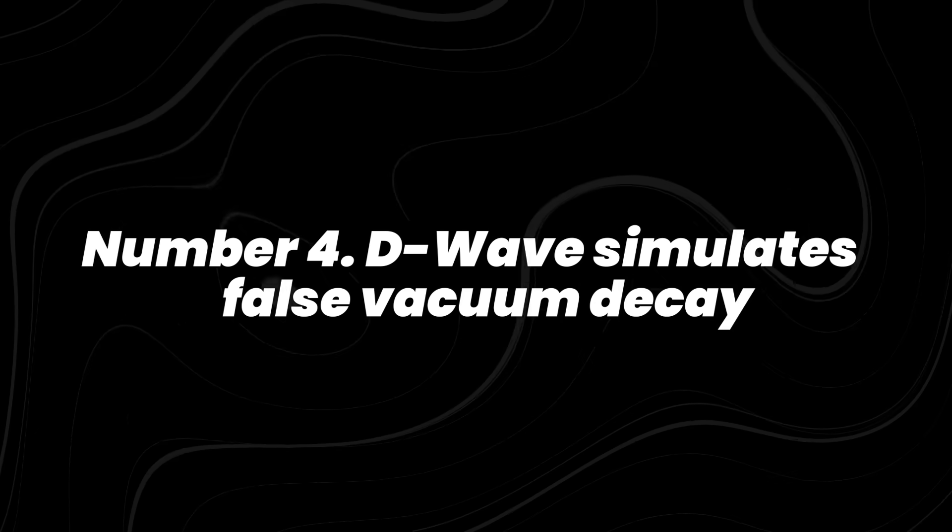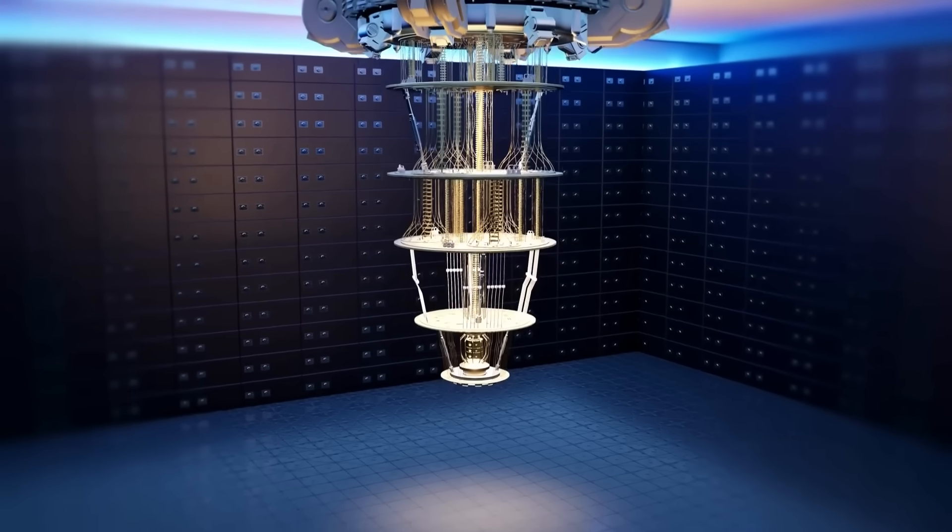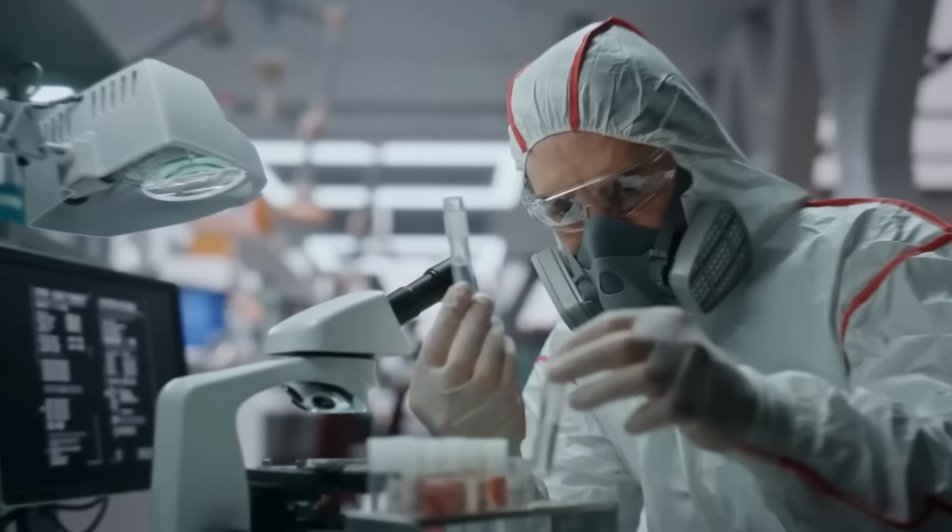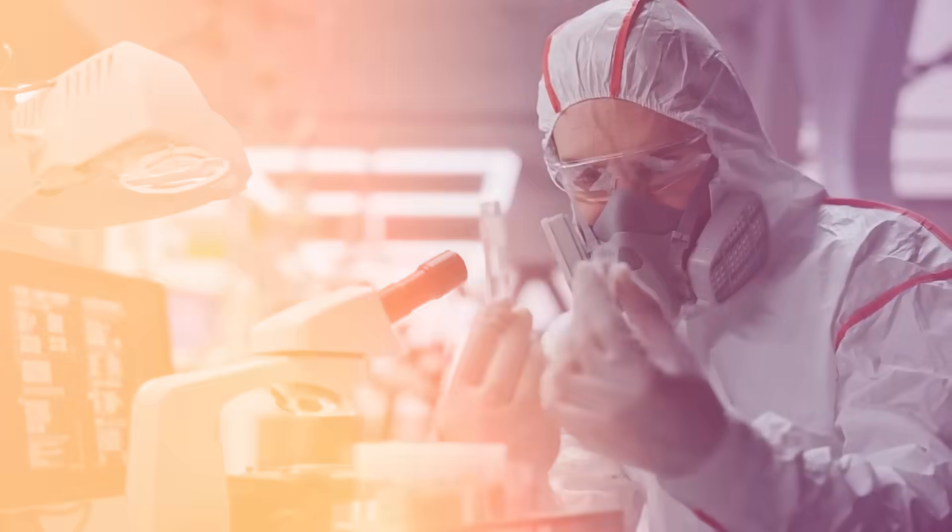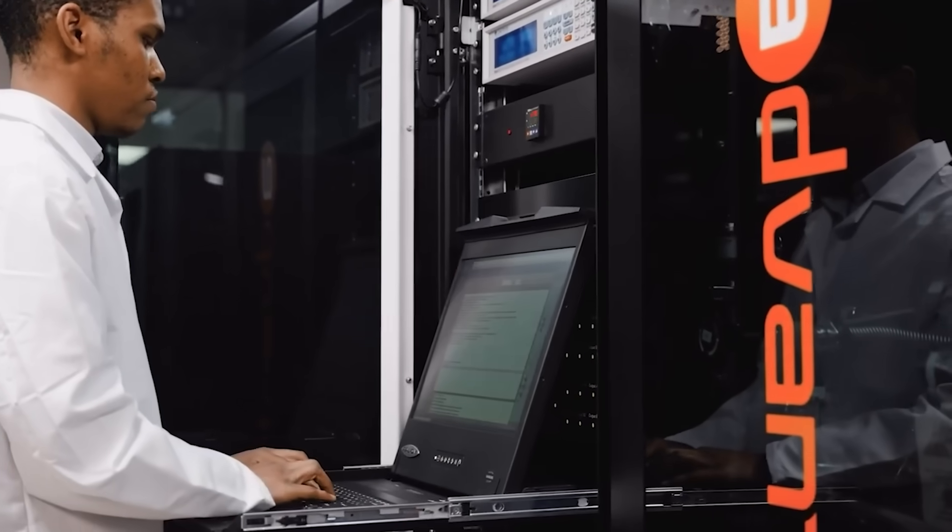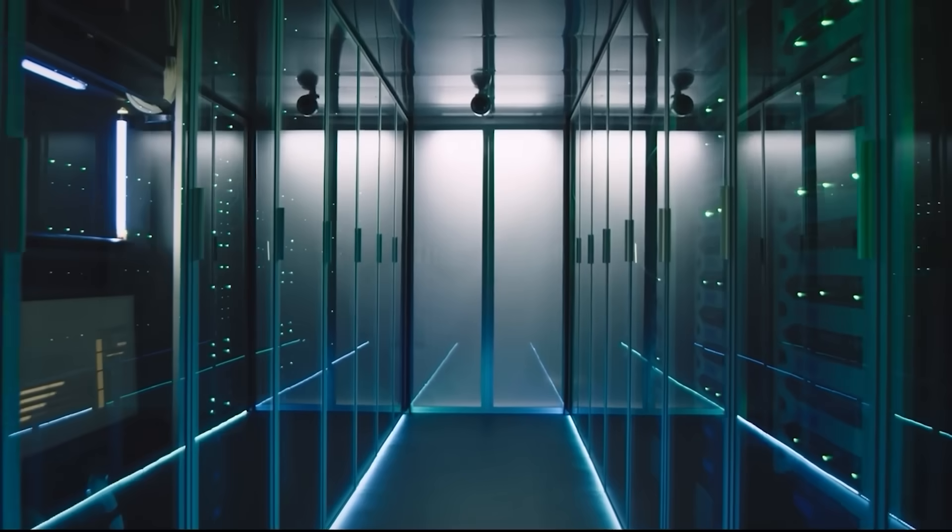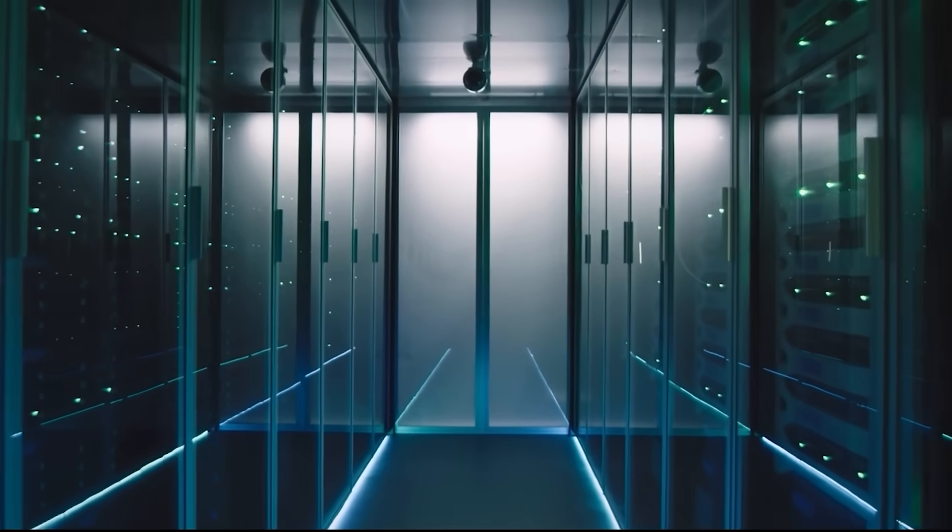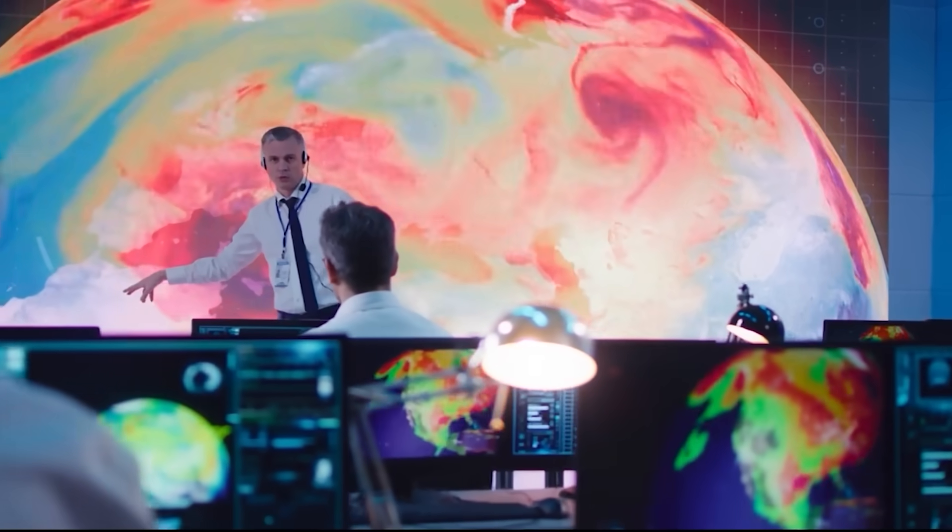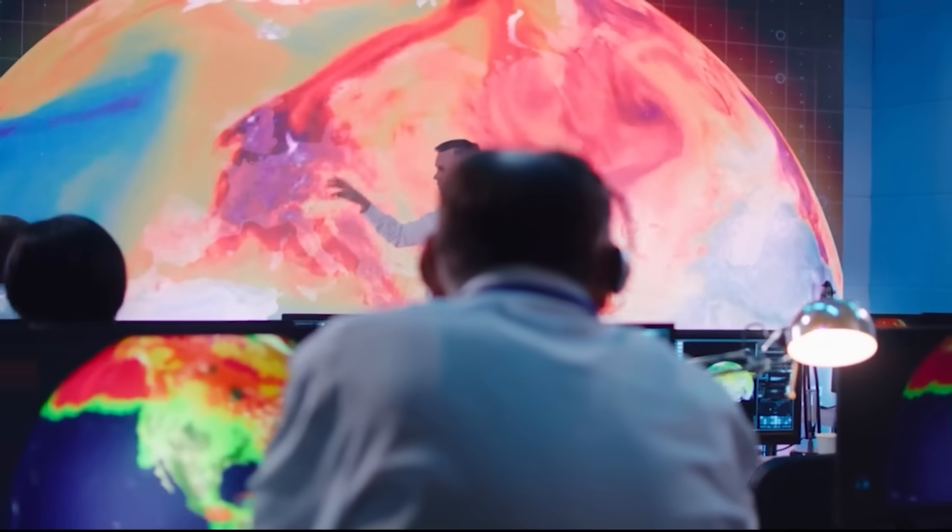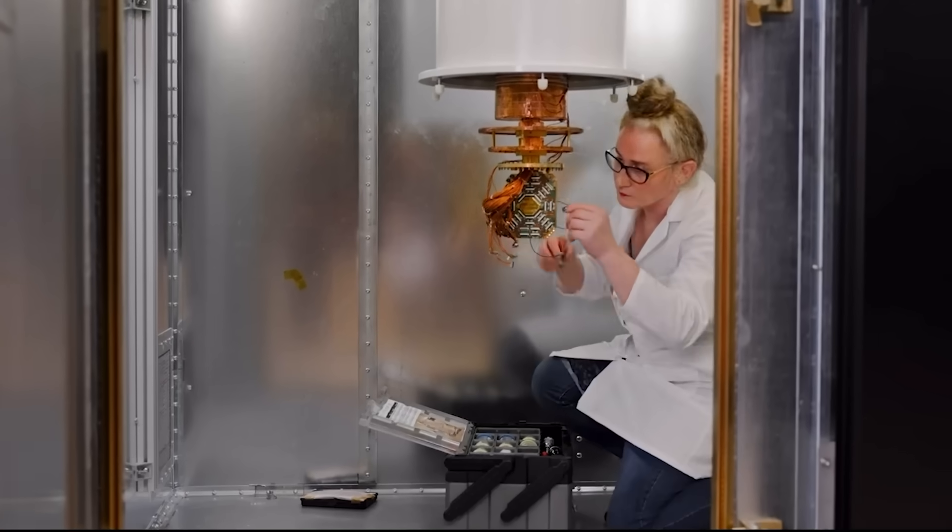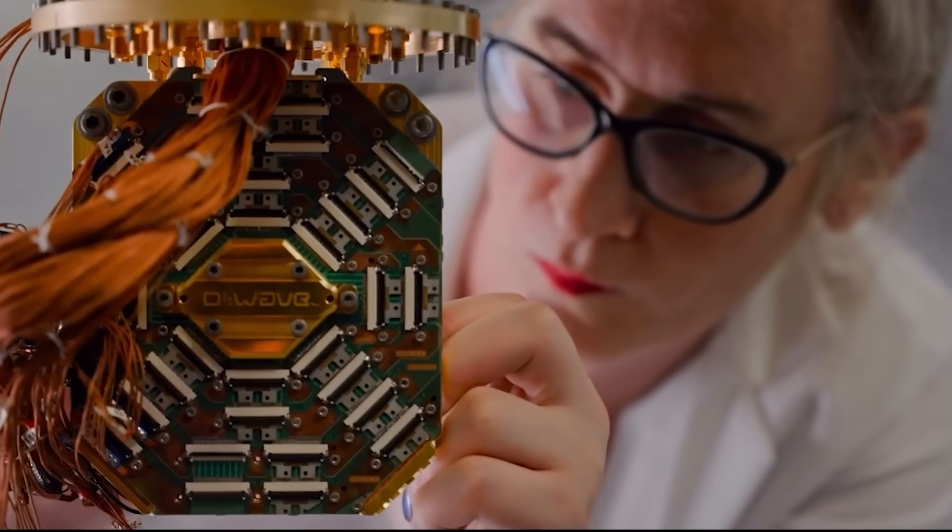Number 4. D-Wave simulates false vacuum decay. Quantum computing is not just about breaking encryption or speeding up chemistry. Some experiments deal with the structure of the universe itself. In 2025, researchers using D-Wave's quantum annealer simulated a process called false vacuum decay. It's a theoretical event in physics where a stable region of space could suddenly jump to a lower energy state. Classical computers struggle with this because the calculations scale too quickly and require enormous memory. D-Wave system modeled the energy landscape in a way classical systems cannot reproduce at scale.